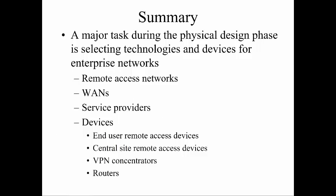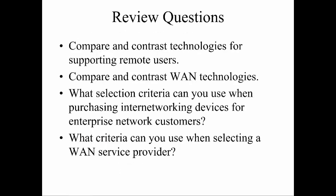That was the end of chapter 11 — there's a lot of information here, and this is more of just a brief overview. Review questions: Compare and contrast technologies for supporting remote users and different types of VPN technologies. Compare and contrast WAN technologies like PPP, Frame Relay, ATM, MPLS, and VPLS. Look at what selection criteria can be used when purchasing devices, and what criteria can be used when selecting WAN providers.